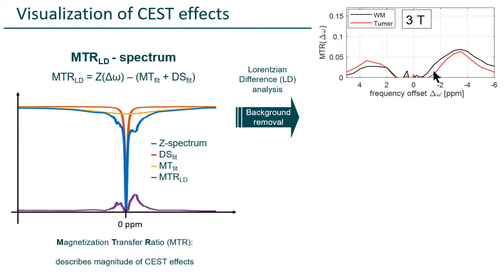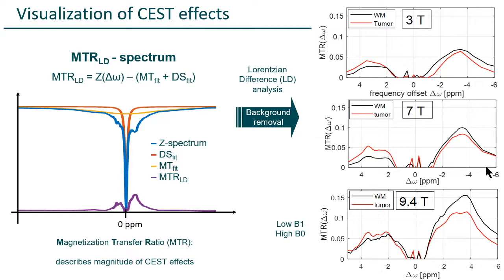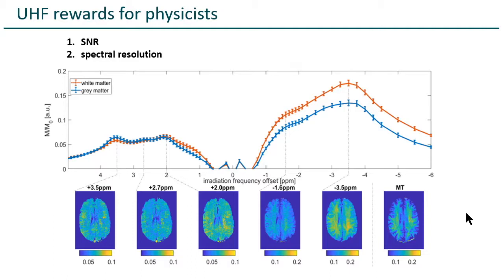What changes if we go to higher field strength? This is white matter — patient data in contralateral white matter and tumor. This is 7T data from the scanner in Heidelberg, and there you see exactly why we like ultra-high field: you see some substructure popping out. And if you go to 9.4 Tesla — all in the human brain — you get really nice spectral features. For CEST imaging, we really gain selectivity and see substructure that we love. We not only get higher SNR at ultra-high field, but we get this nice spectral resolution.